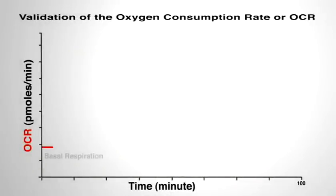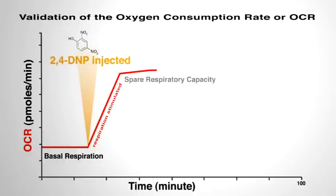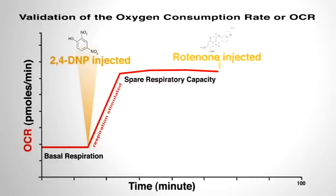To validate the oxygen consumption rate, or OCAR, the basal respiration rate of the A549 cells was established. Respiration was then stimulated by the addition of 2,4-DNP, and OCAR increased as expected. Several minutes later, respiration was arrested upon the addition of the inhibitor rotenone.